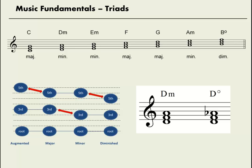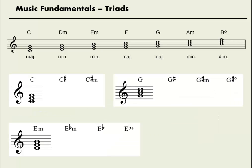Let's try a few more. How would we go from C major to C sharp major, and then to C sharp minor? C E G is major, so C sharp, E sharp, G sharp is major. And how do we go from major to minor? Lower the third — C sharp, E, G sharp.